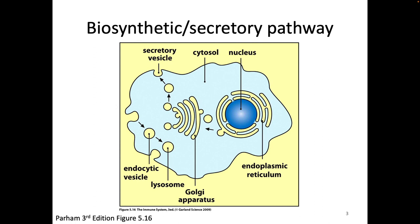Immunologists often think about the cell as being divided into the light blue area versus the yellow area. The light blue area is the cytoplasm. Anything that's in yellow is across a membrane from the cytoplasm. So if you want to move something into a yellow location from the cytoplasm, you have to cross a membrane. And all of the yellow compartments are interconnected with one another.